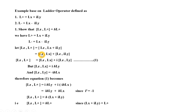Therefore, we separate the commutator bracket: LZ comma LX plus iLY becomes LZ comma LX plus LZ comma iLY. Since i is a constant, it is taken outside the commutator bracket. Therefore, LZ comma L plus equals the commutator bracket LZ comma LX plus i times the commutator bracket LZ comma LY. Consider this as equation number 1.